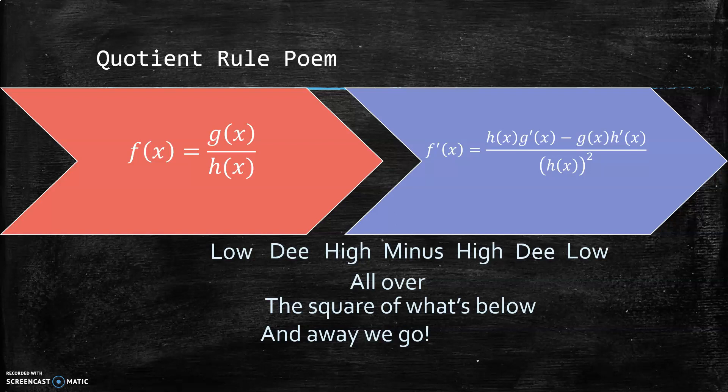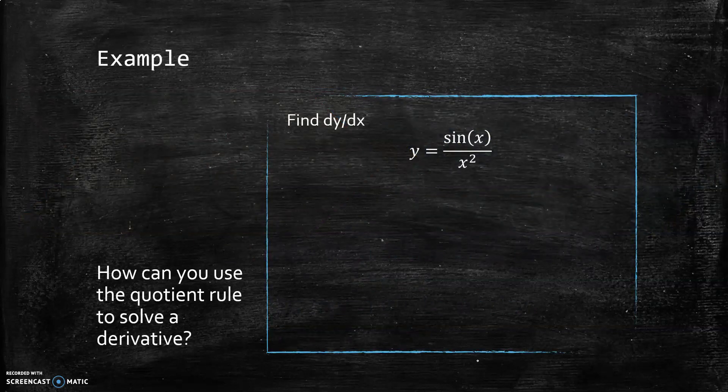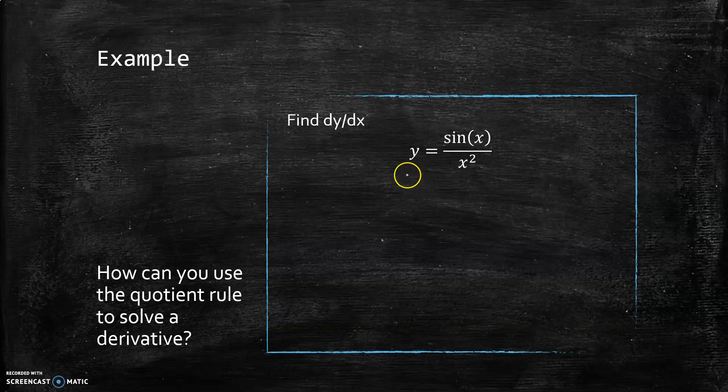So how can you use the quotient rule to solve a derivative? Let's go through this one: find dy/dx for y = sin(x)/x². If you feel confident, please pause and try it on your own, then come back after you've given it a shot. So I'm taking the derivative—dy/dx is the notation for derivative, and the dog is here to help.